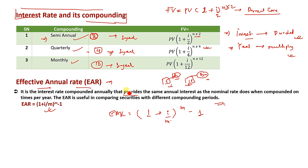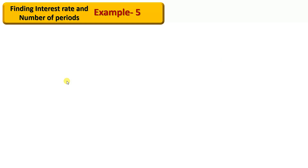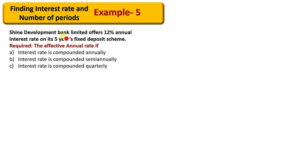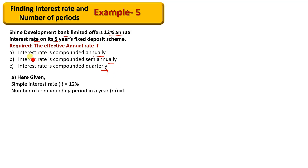If you look at the details of an example, you can easily find the effective annual rate. If you look at a given rate, you can use the interest rate compounding formula to solve the question, including rates compounded annually.